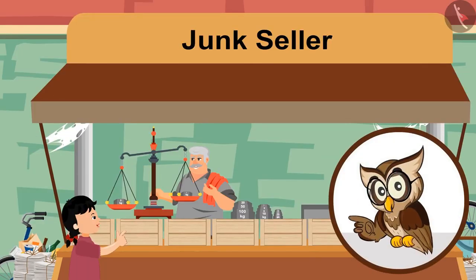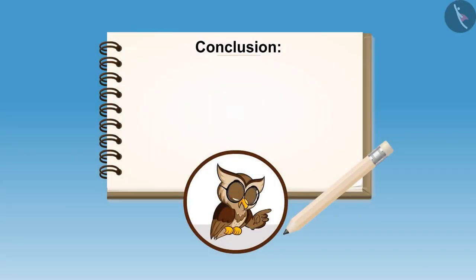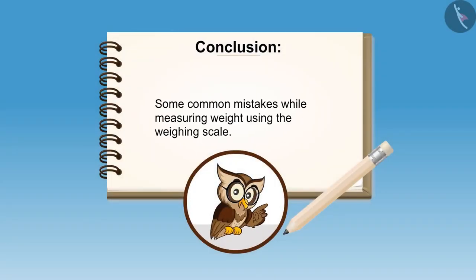So kids, have you understood? In weighing scale, heavier weight moves downwards and lighter weight moves upwards. In this video, we have learnt about some common mistakes while measuring weight using the weighing scale.